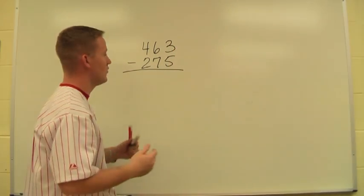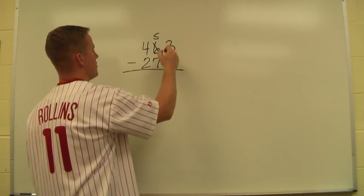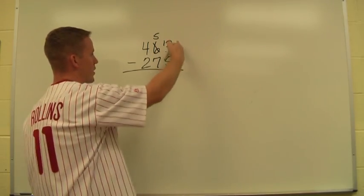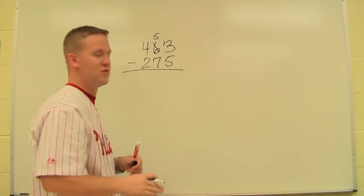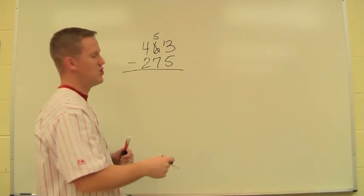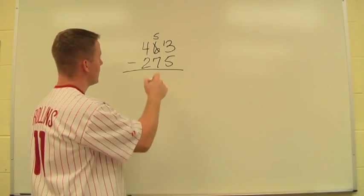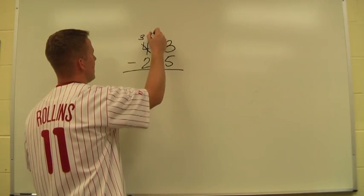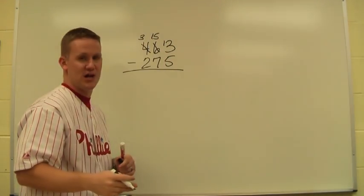I think 3 minus 5. I can't do it. So I'm going to go ahead and borrow from the 6. It becomes a 5. 3 becomes a 13. Now I know I can do that column. Now it's tempting to go ahead and do 13 minus 5, but I'm not going to do that quite yet. I want to make sure I get all my trades done first. I look at my 10s column. 5 minus 7. We can't do it. So we're going to go ahead and trade that too. 4 becomes a 3. 5 becomes a 15. Now I can do the 10s column, and I can also do the 100s column.